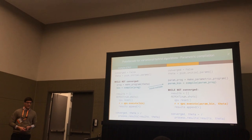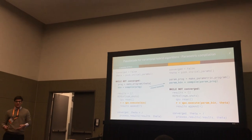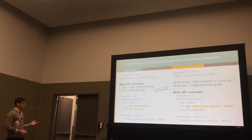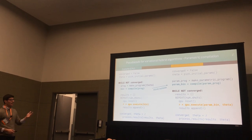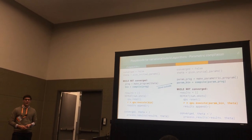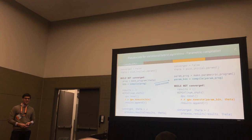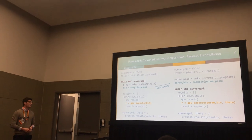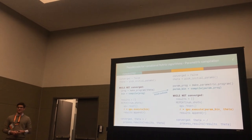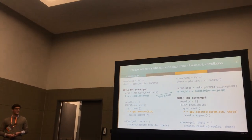If we instead enable parametric compilation, what this does is allow us to move the compile instruction outside of the optimization loop, effectively reducing its overall contribution to the runtime to zero.